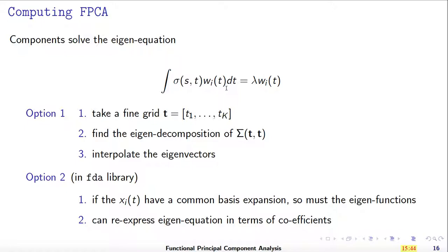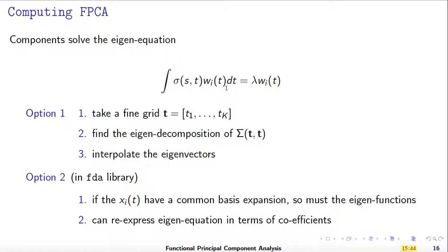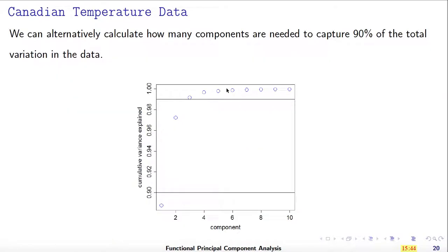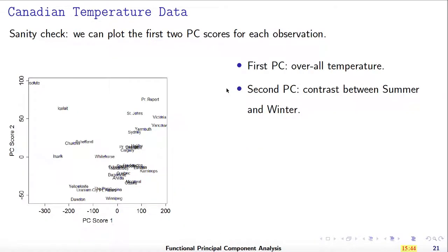Therefore, the FPC is identifiable only up to a sign — positive or negative. You should not pay too much attention to the positive or negative of the score; you should look at the absolute value of the scores. This is a very interesting result from this FPC analysis.